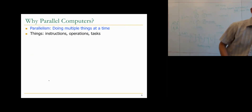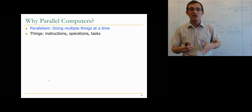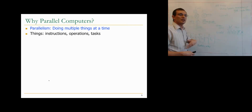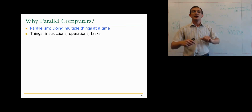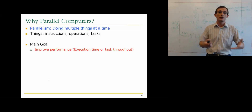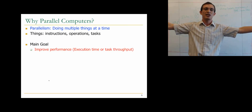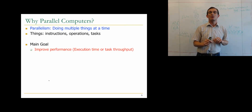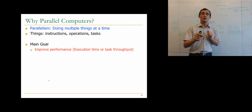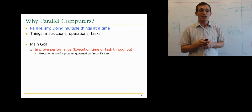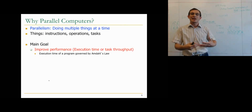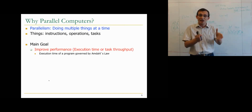Why do we have parallel computing? Parallelism means doing multiple things at a time — instructions, operations, tasks, threads. The main goal has traditionally been to improve performance: reduce execution time of a task, maximize throughput, or minimize latency. However, there's a caveat — execution time is governed by Amdahl's law. If half the program can be parallelized perfectly with infinite resources, the other 50% serial portion remains, so the maximum speedup is only 2x. That's Amdahl's law, which we'll look at later.